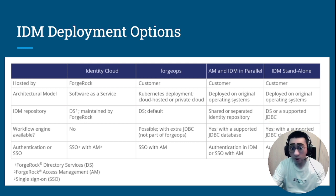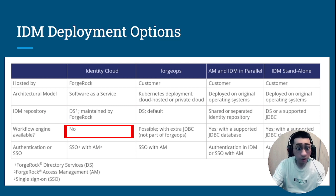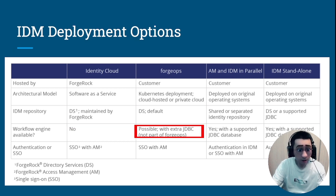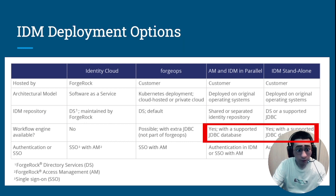Regarding the workflow engine available: workflow is not available in identity card at the moment. It is possible with ForgeOps technology, but you need to do some extra work with JDBC, which is not part of the tools that ForgeWalk provides for cloud Kubernetes-based deployment. It is possible to have workflow with AM and IDM in parallel, and also in the standalone type of deployment.